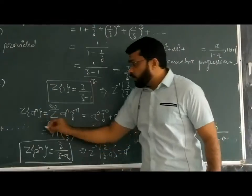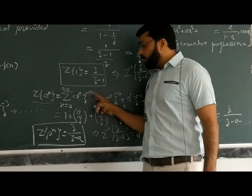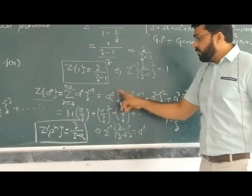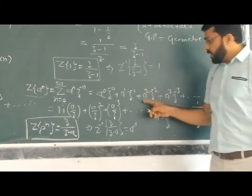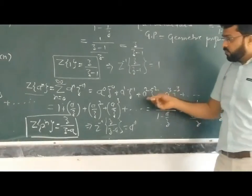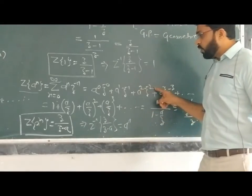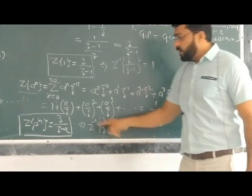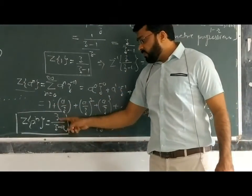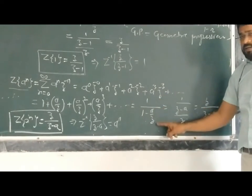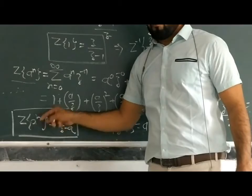Similarly, the Z-transform of a^n by definition is the summation from n = 0 to infinity of a^n * z^(-n). Expanding: 1 + (a/z) + (a/z)² + (a/z)³ + ... This is again a GP with a = 1 and r = a/z. The sum is 1 / (1 - a/z), which simplifies to z / (z - a). Therefore, Z{a^n} = z/(z - a).